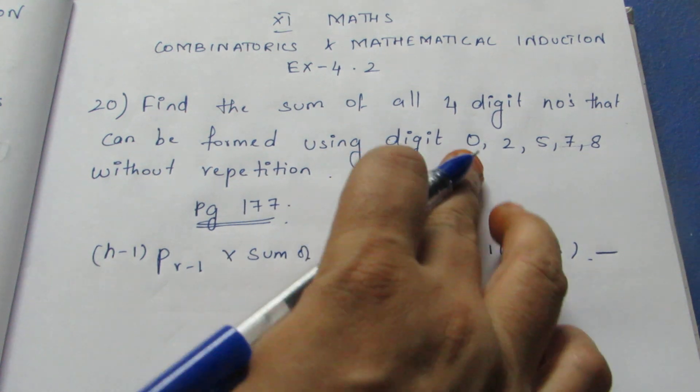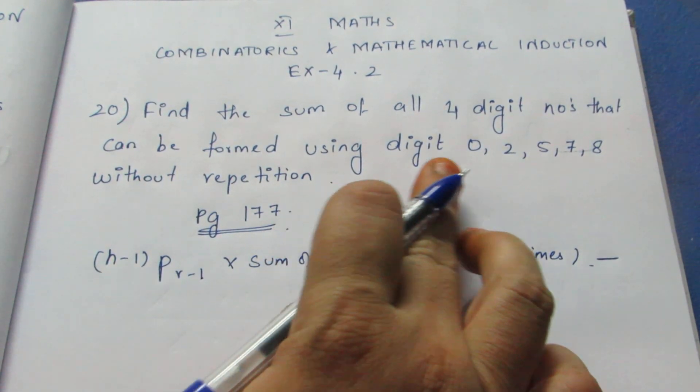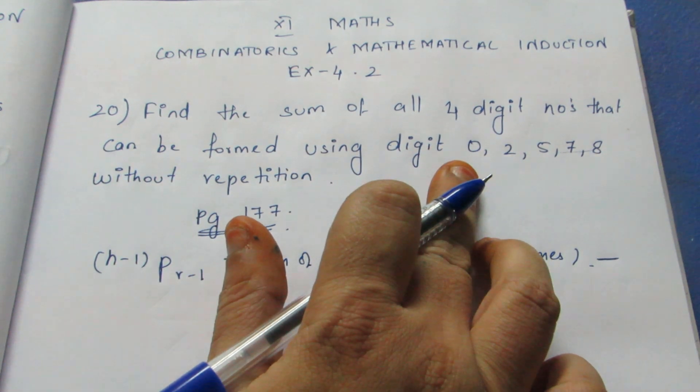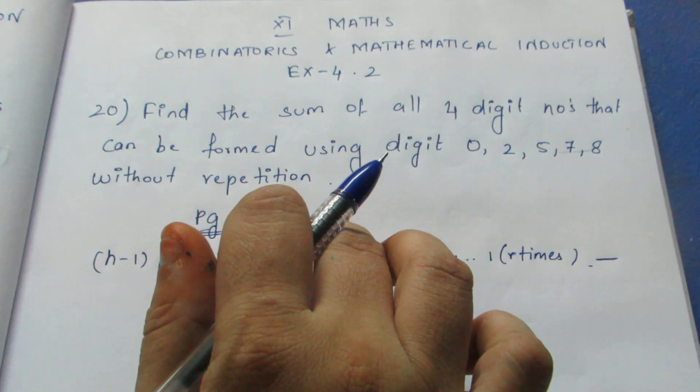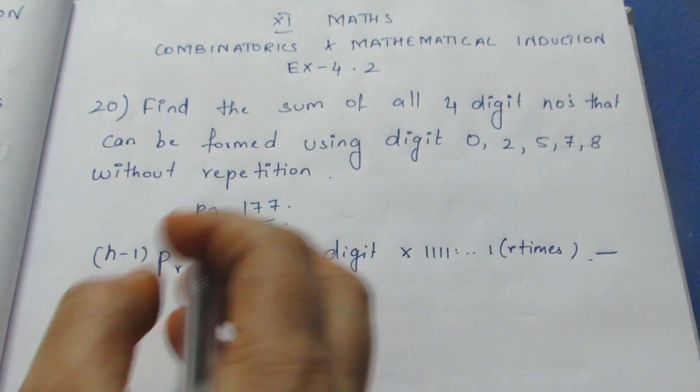Minus - since 0 is included, 0 should not come in the 1000th place because we need 4-digit numbers. In 4-digit numbers, if 0 comes in the 1000th place, it becomes a 3-digit number. That's why we subtract. Without repetition.